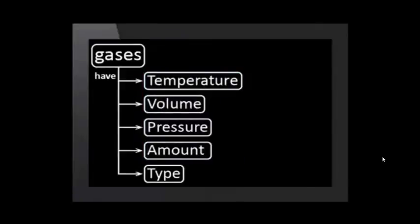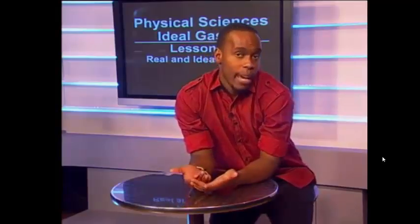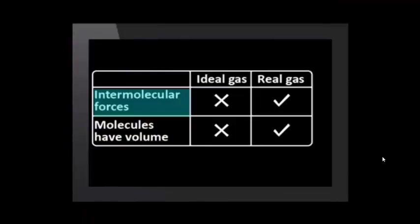We have not discussed the effect of the type of gas on its behavior. This is because, in ideal gas theory, all gases behave the same way. However, some gases behave more like an ideal gas than others. Gases with weak intermolecular forces and molecules with a small volume behave most like an ideal gas.